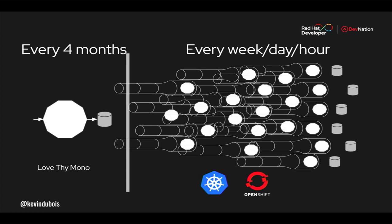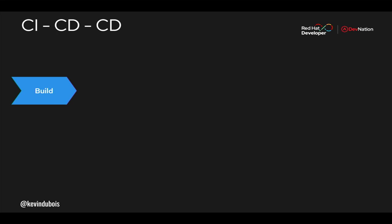We're developing in more distributed architectures these days. We don't just have one thing to deploy anymore — we have all these different components that all need to be deployed individually. That means you need a pipeline for each and a delivery mechanism for each of these projects, so we need a better way to deliver.